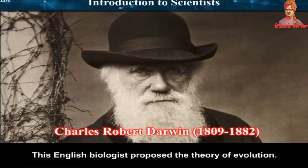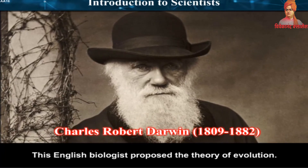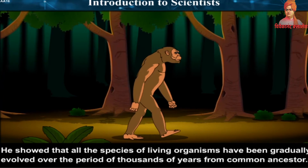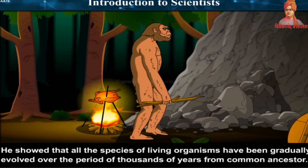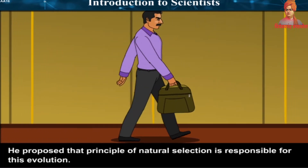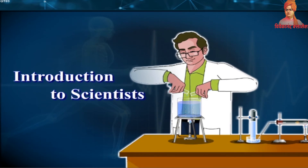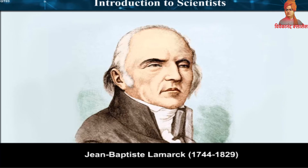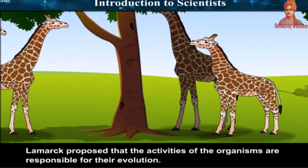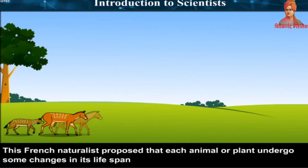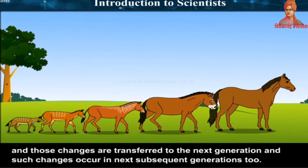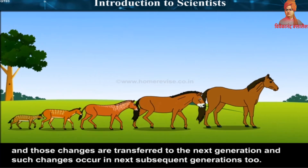Charles Robert Darwin (1809–1882), an English biologist, proposed the theory of evolution, showing that all species of living organisms have gradually evolved over thousands of years from common ancestors via the principle of natural selection. Jean-Baptiste de Lamarck (1744–1829), a French naturalist, proposed that each animal or plant undergoes some changes in its lifespan, those changes are transferred to the next generation, and such changes occur in subsequent generations too.